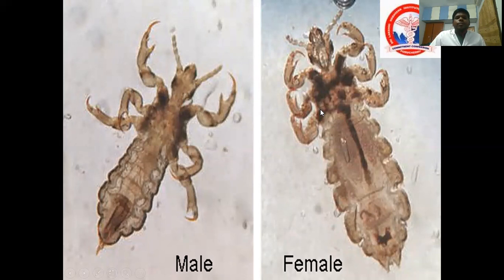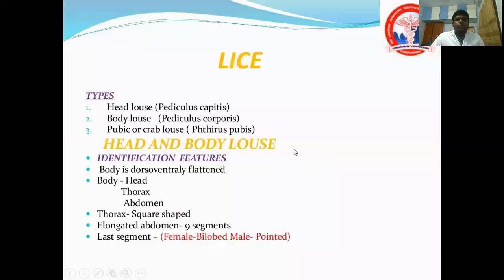On the left side it is male, on the right side it is female. To differentiate, look at the abdomen area. The male has a single pointed structure at the end, whereas the female has a bifid end. That is how we differentiate male and female lice.